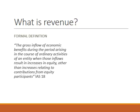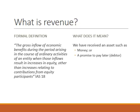That's quite a tough definition to remember, so we're going to think about what it means in practice. The formal definition talks about gross inflows of economic benefits, which means that we've received an asset. That asset might be money — so we've supplied some goods and received money for it — or it might be a promise on behalf of a customer to pay at a later date, in which case the asset we've received is a debtor or a receivable.